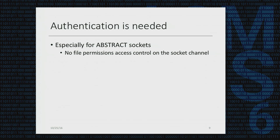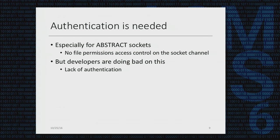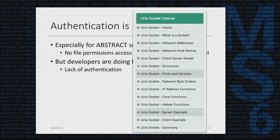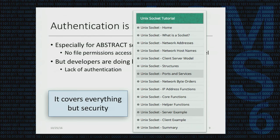After establishing a Unix domain socket connection, the server and client need to perform authentication to prevent unauthorized access, especially for abstract sockets, since there is no file permission access control on the socket channel. But in reality, developers are not doing a good job on this. Maybe it's hard to blame them because online tutorials are quite misleading — if you Google a Unix domain socket tutorial, you'll find that the most popular one covers pretty much everything except security.